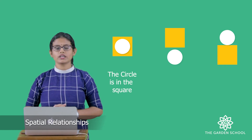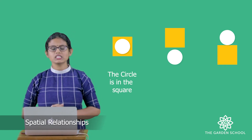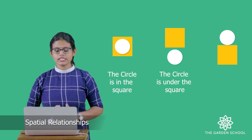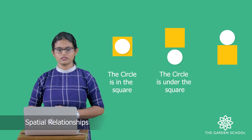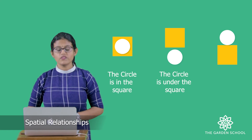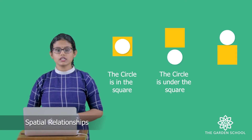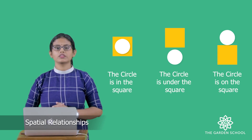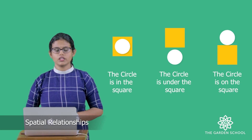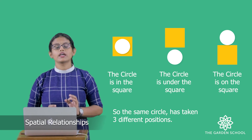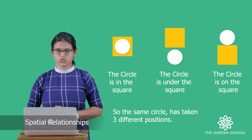See the next one. Where is the position of the circle? Now it is under the square. See the next one — where is the position of the circle? The circle is on the square. So the same circle has taken three different positions.